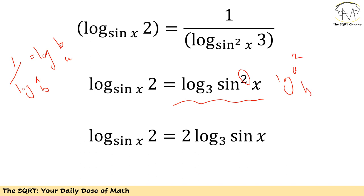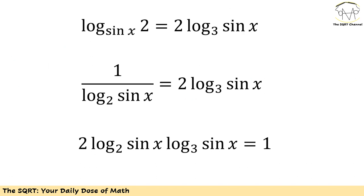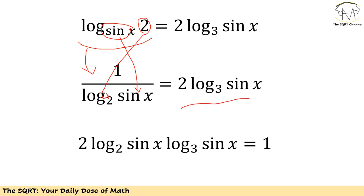Now I apply a similar trick: I replace the left hand side with 1 over log of sine x in base 2, keeping the right hand side. After rearrangement, we have: 2 times log of sine x in base 3 times log of sine x in base 2 equals to 1. Here, sine of x is a number and both log bases are known numbers: 2 and 3.